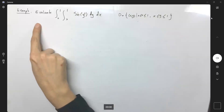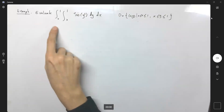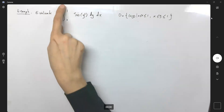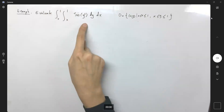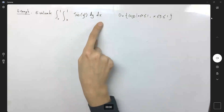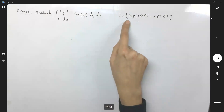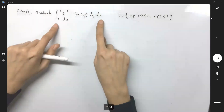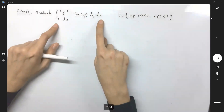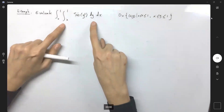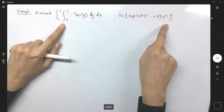Let us evaluate the double integral from 0 to 1, x to 1, of sin(y²) dy dx. The region D is defined as the set of points where x is bounded between two fixed values, 0 and 1, but y is bounded between two functions.